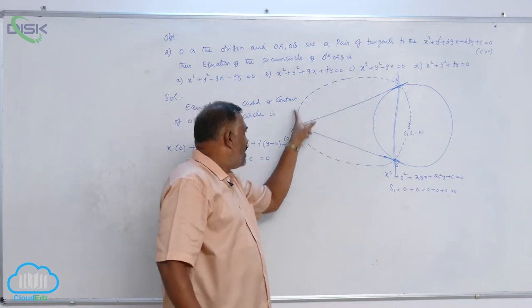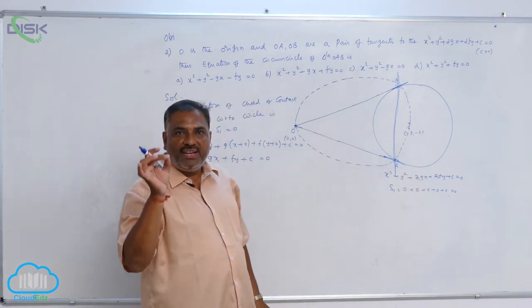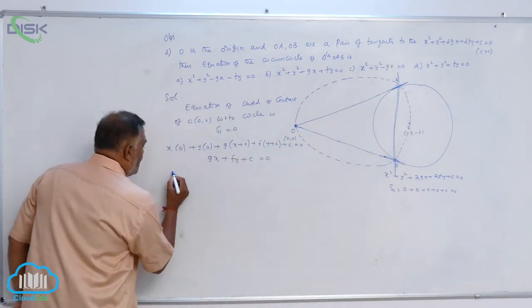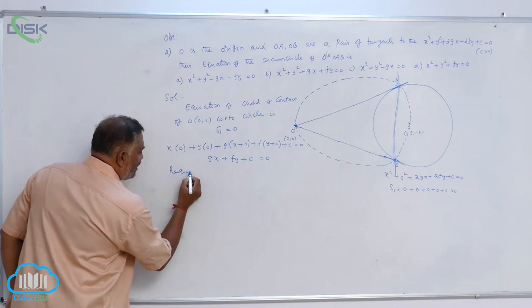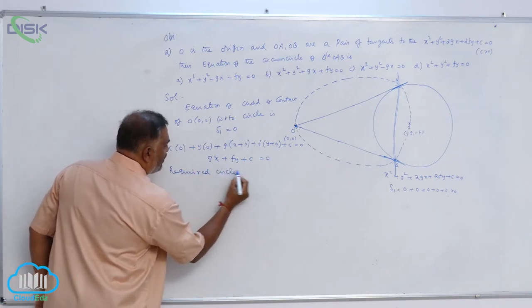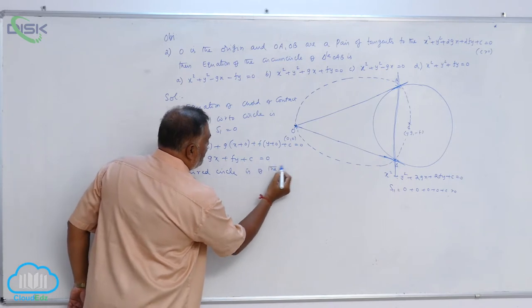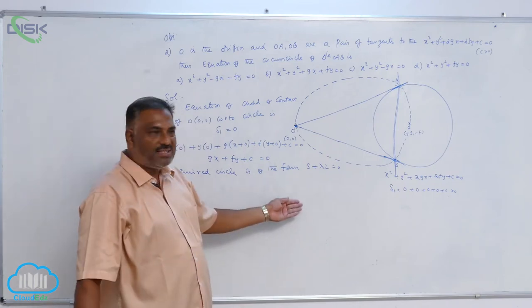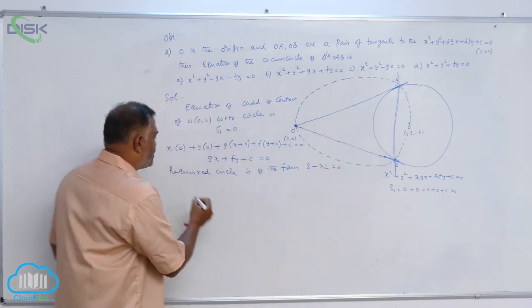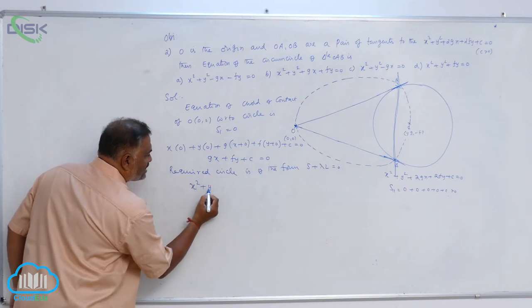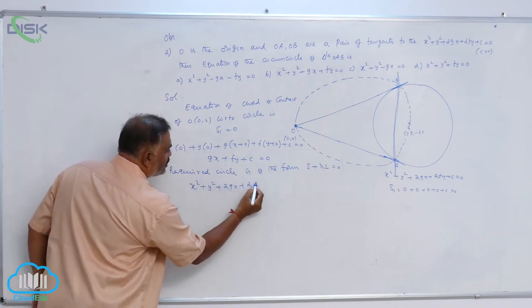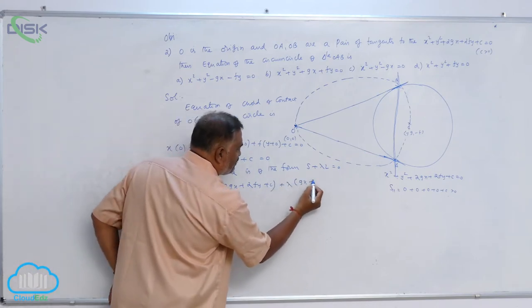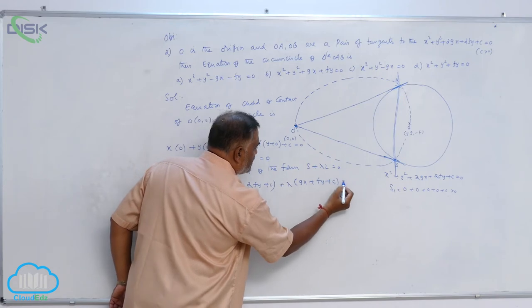Now, the required circle passes through the point of intersection of given circle and this chord of contact. So, required circle is of the form S plus lambda L equal to 0, circle plus lambda times chord of contact. So, X square plus Y square plus 2GX plus 2Fy plus C plus lambda times GX plus Fy plus C is equal to 0.